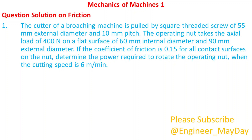Kindly note that this is a continuation. Let's begin with this question. The cutter of a broaching machine is pulled by a square threaded screw of 55 millimeters external diameter and 10 millimeters pitch. The operating nut takes the axial load of 400 newtons on a flat surface of 60 millimeters internal diameter and 90 millimeters external diameter. If the coefficient of friction is 0.15 for all contact surfaces on the nut, determine the power required to rotate the operating nut when the cutting speed is 6 meters per minute.